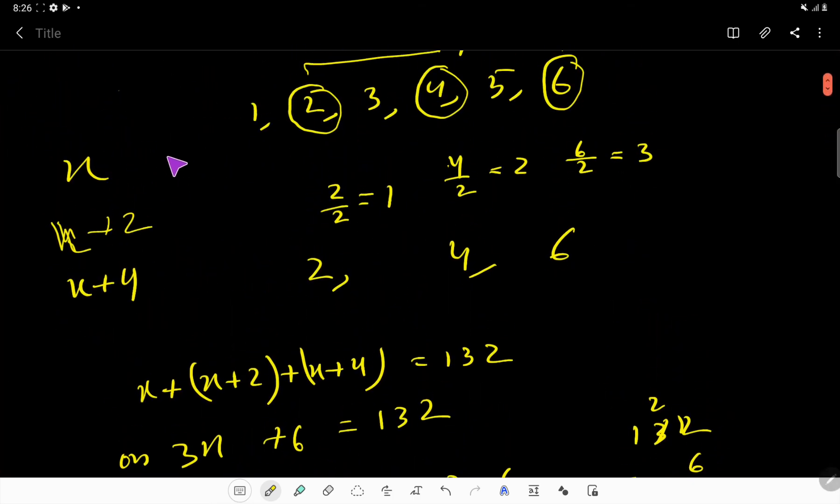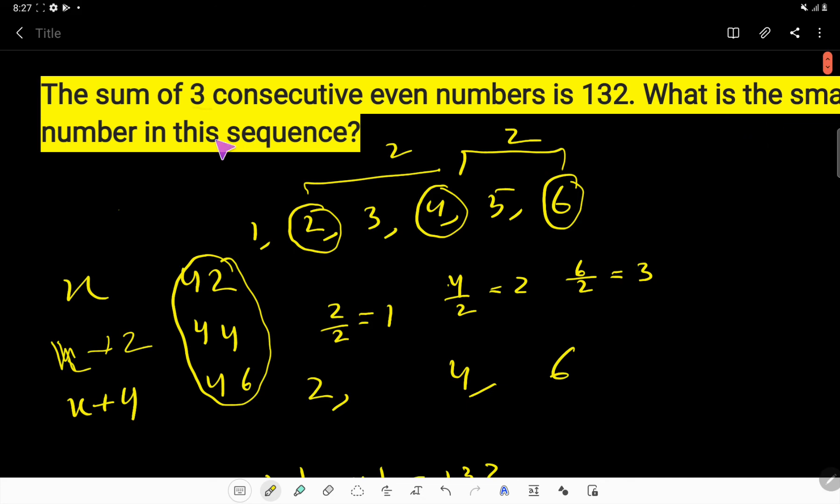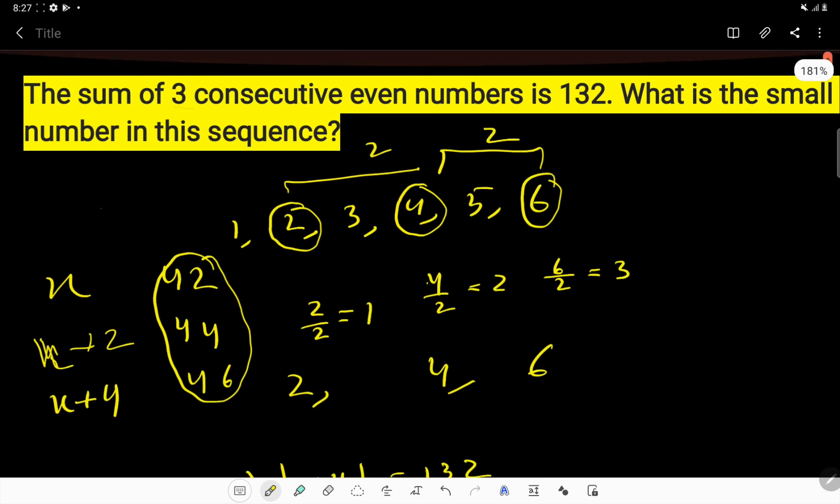So our first number will be 42, and the second number will be x plus 2, that is 42 plus 2, which is 44. And the third number will be 46, x plus 4. So these are the three consecutive numbers, and 42 is the smallest number.